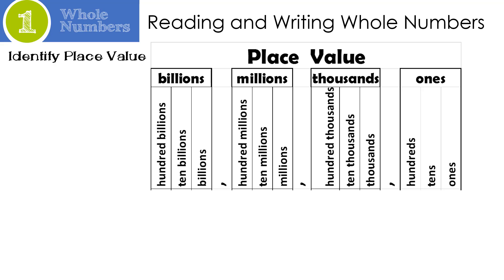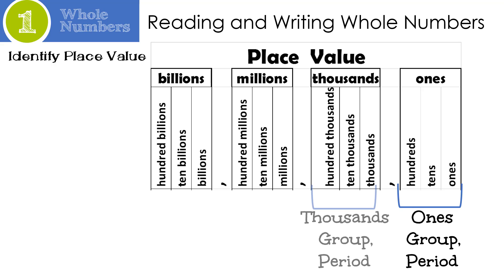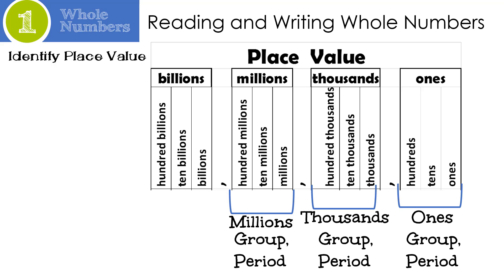Before we can start reading and writing whole numbers, we need to talk about place value. Most of us know ones, thousands, millions, billions, and so on. But did you know that each of these is called a group? This one's called the ones group or period, the thousands group or period, the millions group, and the billions group. For this video, we're only going to go to millions.